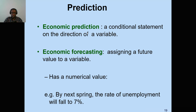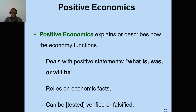An economic prediction is a conditional statement on the direction of a variable. For example, you might predict whether GDP or output in an economy will be higher in the first quarter of 2023 or 2024 based on your model. Economic forecasting goes further by assigning a specific future numerical value to a variable. For example, we can forecast that by next spring, the rate of unemployment will fall to 7% or to 2%.